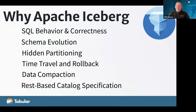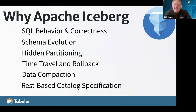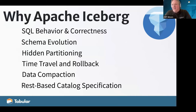Iceberg has a REST catalog specification, which allows for important capabilities such as multi-table commits, write deconfliction, and having a single point to access your Iceberg data.